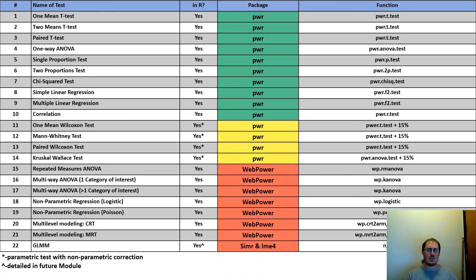Okay. So this is a table of the tests we'll be going through. I have broadly separated them into three groups. Green, which is kind of easy. It's all in this package power. These are pretty simple tests, pretty straightforward.